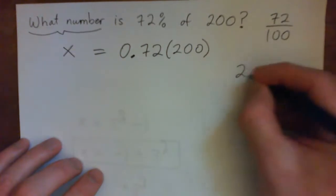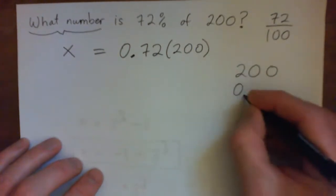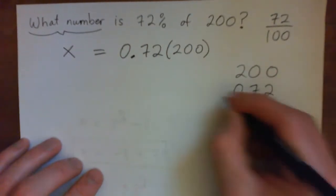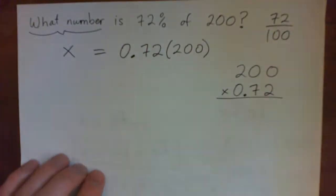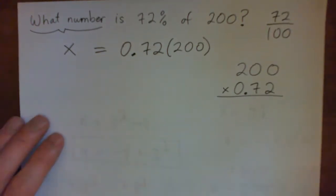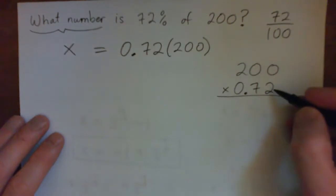So long multiplication, 200 times 0.72. Press pause on the video and do this yourself. Of course, you could do it in a calculator, but in this class, I want to practice without a calculator, right? It's good to practice this for now. Okay, I hope you pressed pause and tried it. I'm going to do it now.